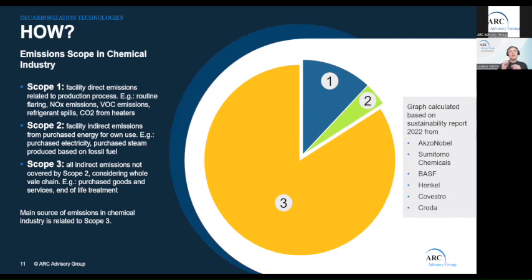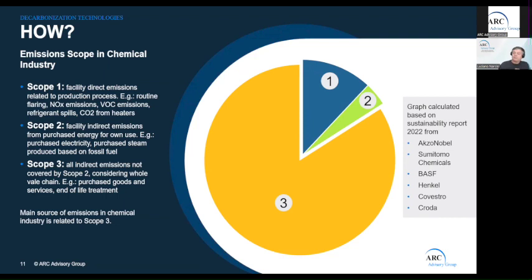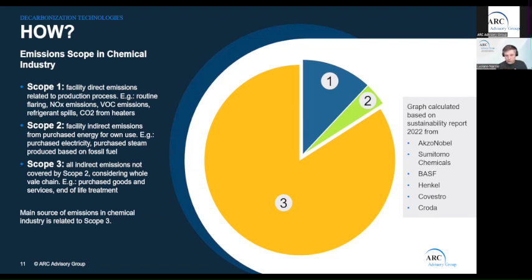Scope 2 are the indirect emissions related to the energy that the company is purchasing — electricity or steam purchased from third parties. If these are produced using fossil fuels, they carry associated emissions. Scope 3 is the most relevant. These are all indirect emissions related to the whole value chain of products — not considered in scope 2 — from the feedstock all the way through to the treatment and end of life of the product. According to the sustainability reports we have scanned, scope 3 is the most significant.